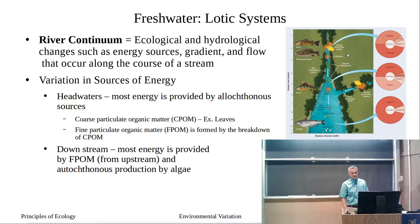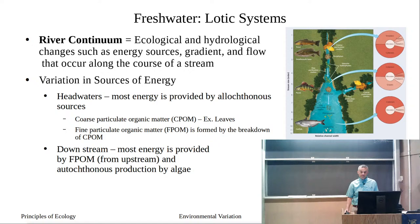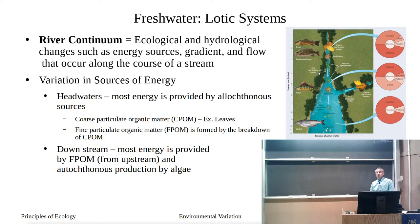As we travel down the stream, we go from coarse particulates to fine particulates. We see a transition in our invertebrate community from shredders and collectors to primarily collectors and grazers, all the way down to primarily collectors. Grazers appear once the water becomes enriched with nutrients. As we move away from headwaters — which are small, fast-flowing, and shaded — we move toward wider, slower, more sunlit habitat.